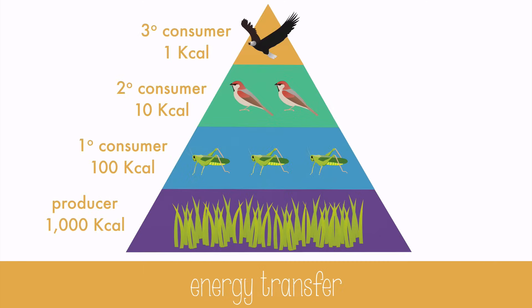The amount of energy that gets transferred from one level to the next is surprisingly small. Only about 10% of energy from the previous level is transferred to the next each time. Most of the energy is lost as heat, or metabolic and digestive waste, as the organism lives its life. Luckily, there are lots and lots of producers at the bottom level to supply the energy needs further up the pyramid.